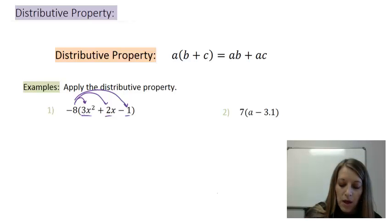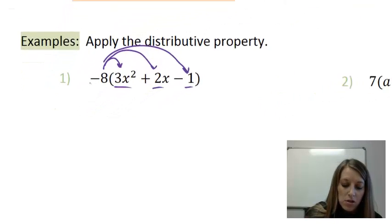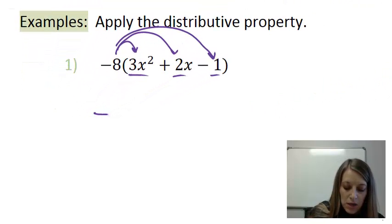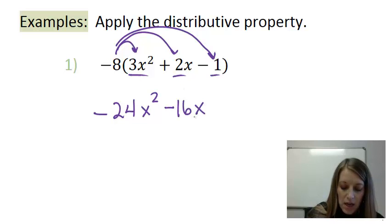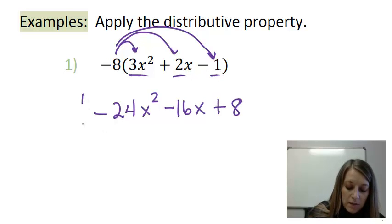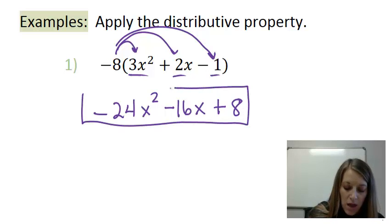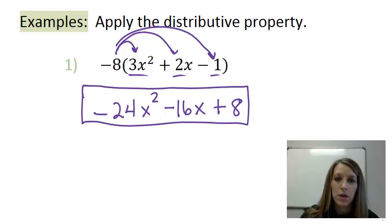All we need to do here is multiply the numbers in front. So negative eight times three gives me a negative 24x squared. Negative eight times positive two gives me a negative 16 times x. And then negative eight times negative one gives me a positive eight. So I have distributed my negative eight all the way through those parentheses.